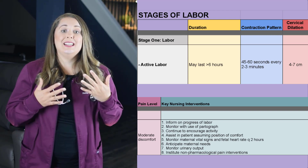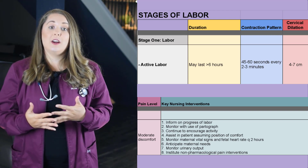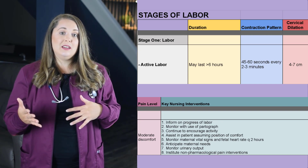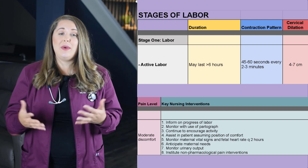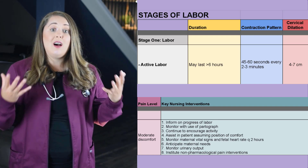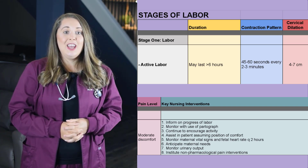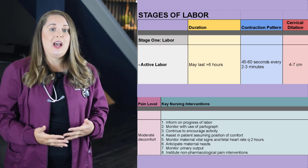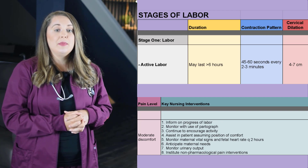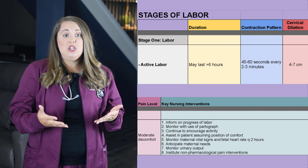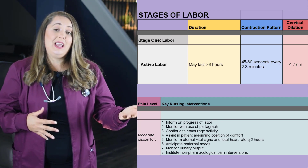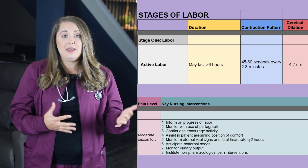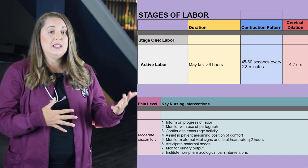You also want to anticipate the mom's needs — for example, sponging her face with a cool cloth, keeping the bed clean and dry, providing ice chips or lip balm — anything to help promote comfort. Determine when the patient last voided, because a full bladder can actually slow down labor progress. Also institute non-pharmacological pain measures such as breathing exercises, distraction method, imagery, and music therapy.